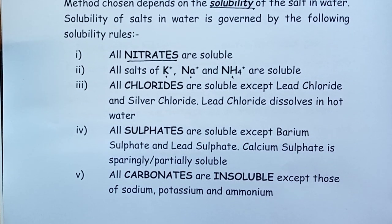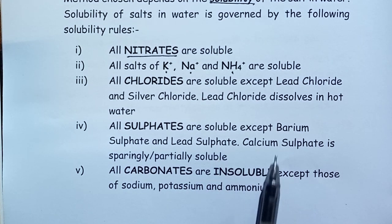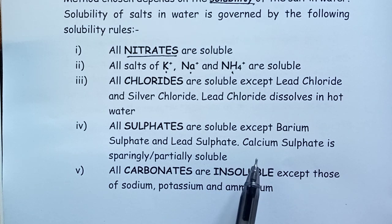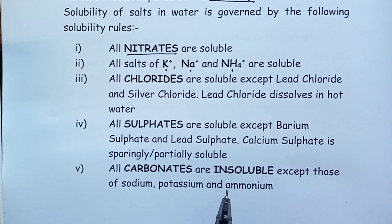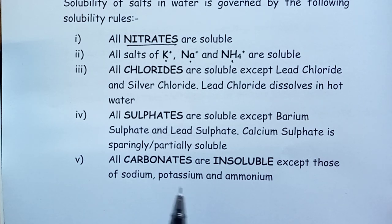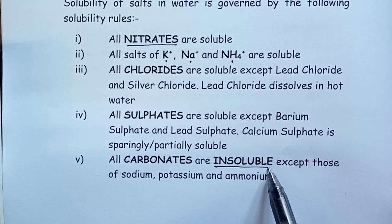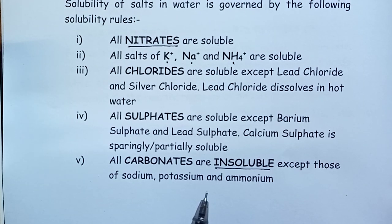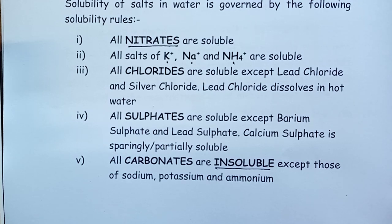Rule four: sulfates are soluble, with exceptions of barium sulfate and lead sulfate. Calcium sulfate is a special case — it dissolves only partially, so we say it is sparingly soluble. Rule five: carbonates are insoluble, except those of sodium, potassium, and ammonia. These rules guide our students on which salts are soluble and which are insoluble.